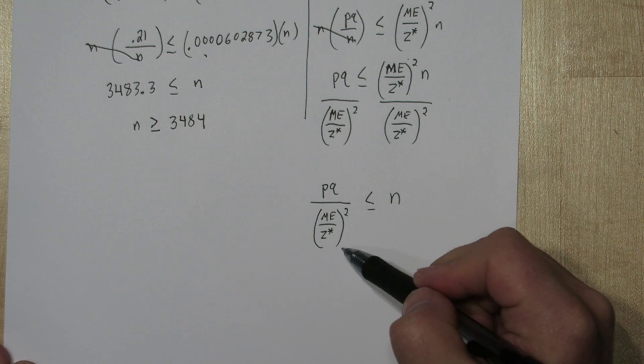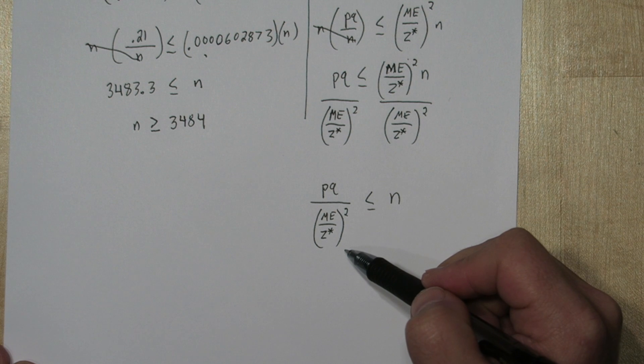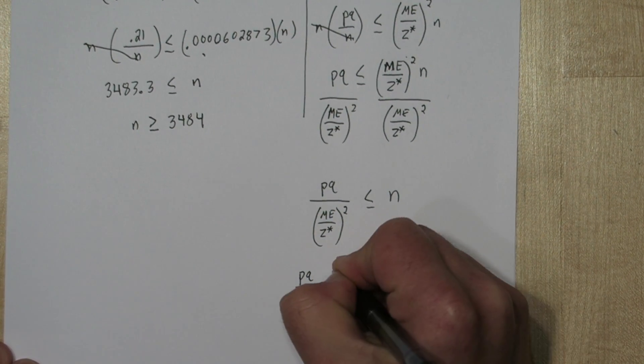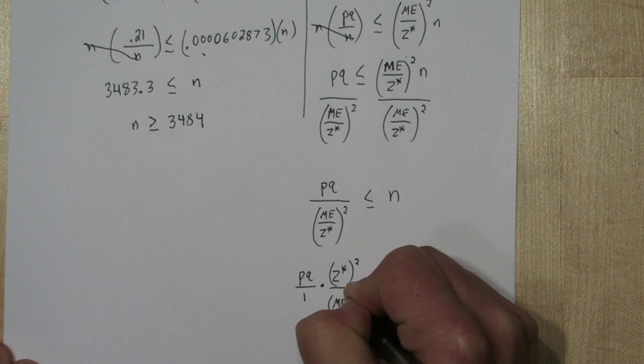So pq is being divided by this fraction, margin of error squared, divided by z star squared. So when you divide by a fraction, it's equivalent to multiplying by the reciprocal. So we'll just multiply pq over 1 times z star squared over margin of error squared.